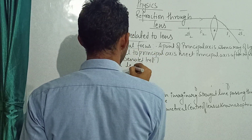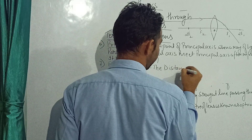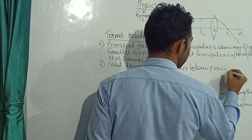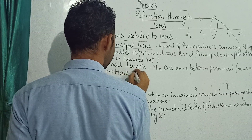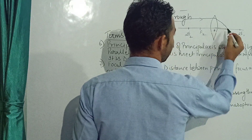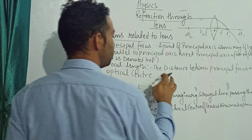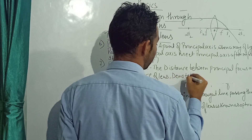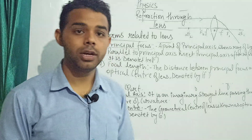The seventh term is focal length. The focal length is the distance between the principal focus and the optical center of the lens. It is denoted by f. So these were the seven terms related to your lenses.